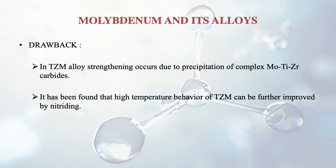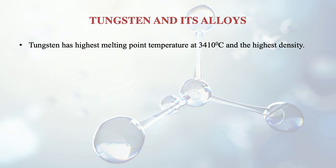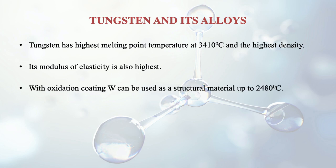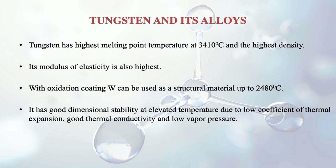Moving to the higher end of melting points — tungsten has the highest melting point of around 3410 degrees centigrade, and its density is also the highest. Its modulus of elasticity is also the best. With oxidation coating, tungsten can be used as a structural material up to 2580 degrees centigrade, making it suitable for rockets and space shuttles. It has good dimensional stability at elevated temperatures due to its low coefficient of thermal expansion, good thermal conductivity and low vapor pressure.